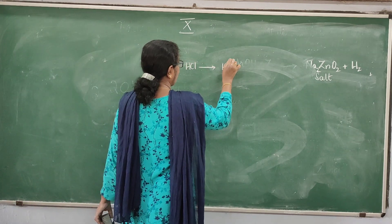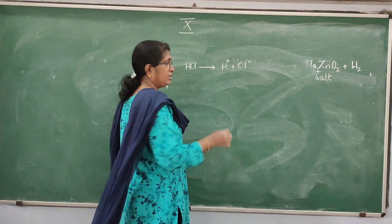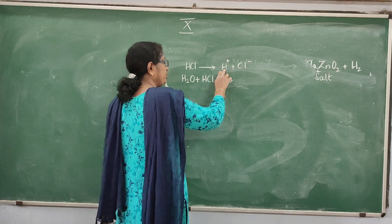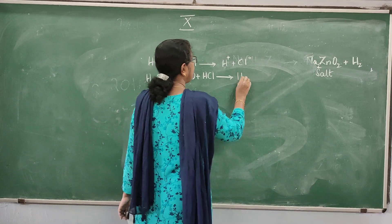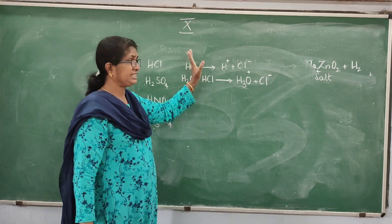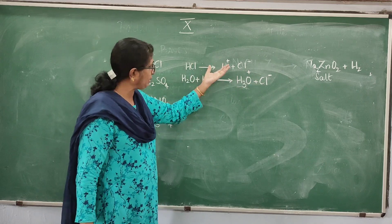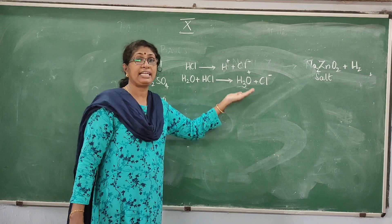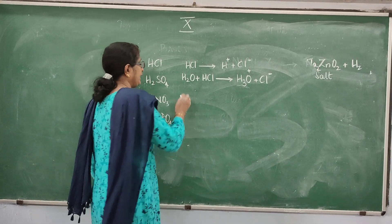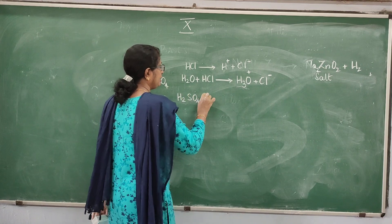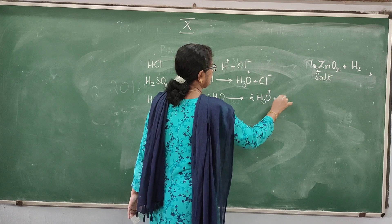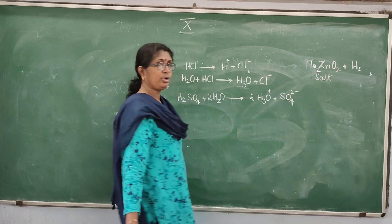For example, when you add HCl to water, you get H+ plus Cl−. What is actually happening is that HCl dissociates into H+ and Cl−, and this H+ ion combines with the water molecule to form hydronium ion H3O+. So whenever you add an acid to water, you will get hydronium ions in solution.